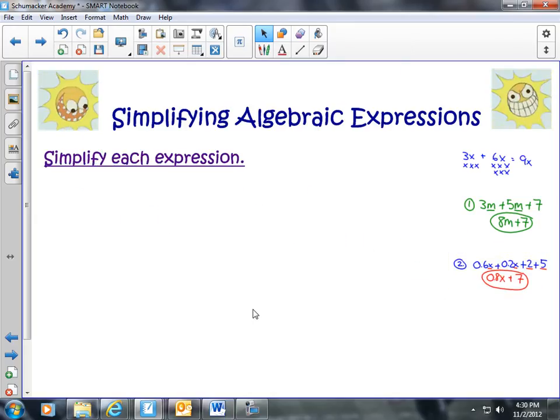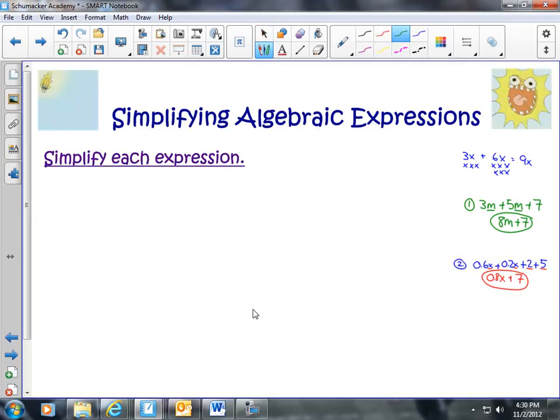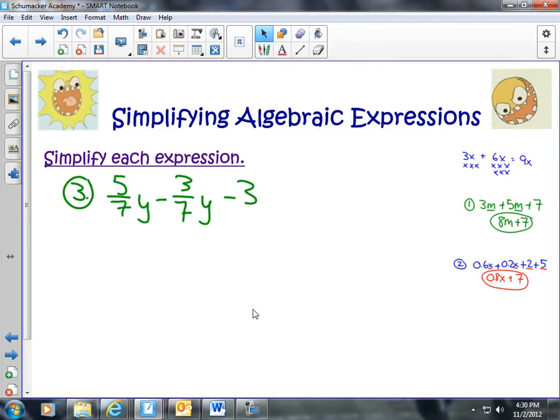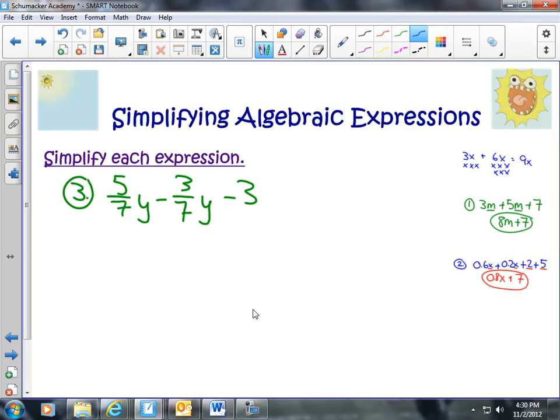We've seen them with decimals. We've seen them with whole numbers. You can add them with fractions as well. In this case, we have 5 sevenths y minus 3 sevenths y minus 3. So in this case, the 3 has no one else with him. So he'll just come right back down here, minus 3.